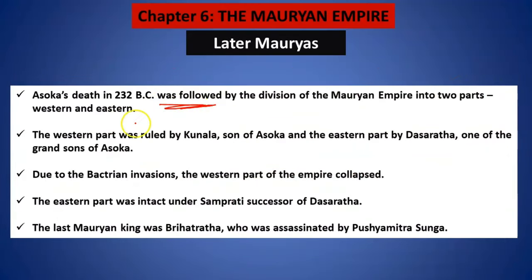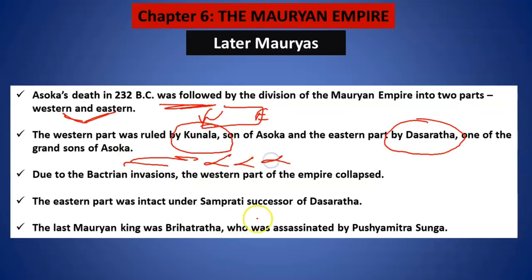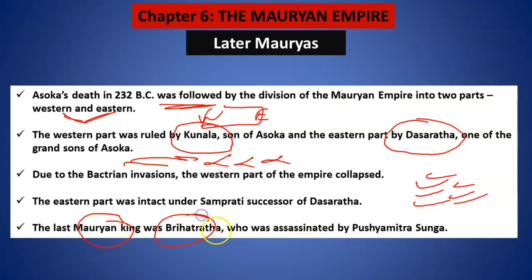After his death, his entire empire was divided into two parts — eastern and western. Western was ruled by his son Kunal and eastern by his grandson Dasharatha. Then foreign invasions also started — Bactrian invasion. So the western part collapsed, and the successive rulers were not so effective. Then the last Mauryan king, Brihadratha, was assassinated by Pushyamitra Shunga. From here we will start the Shunga dynasty.